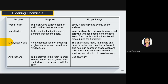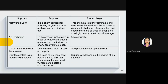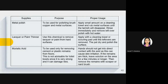Air freshener is sprayed in the room to remove foul odor. Carpet stain remover is used to remove stains or spots on carpets. Disinfectant like Lysol is used to avoid bacterial growth in comfort rooms. Metal polish is used for polishing metal surfaces. Lacquer or paint thinner is used to remove lacquer or paint from hard surfaces — apply with a cleaning towel or scoring pad until residue is removed, then dry and polish the surface. Muriatic acid is a common cleaning agent but is not advisable for toilet bowls as it is very strong and can damage tiles; avoid direct skin contact as it can cause skin irritation.